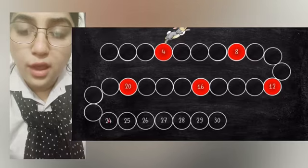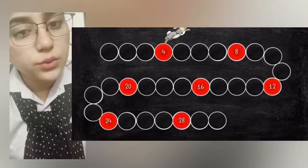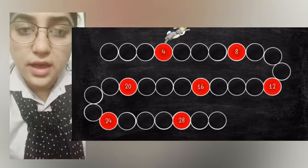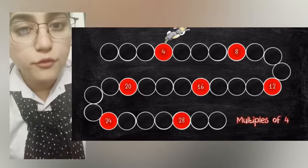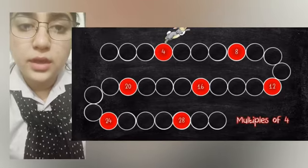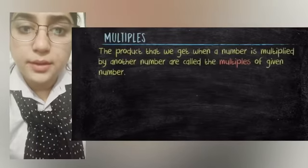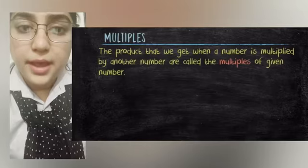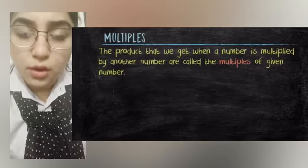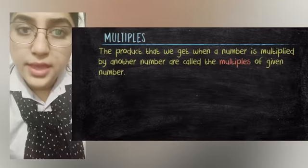The rabbit continues to 24 and 28. Students, note that all these numbers in red are multiples of four. The product that we get when a number is multiplied by another number is called the multiple of the given number.